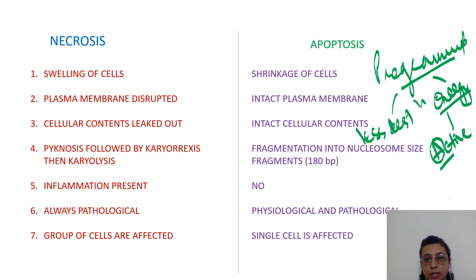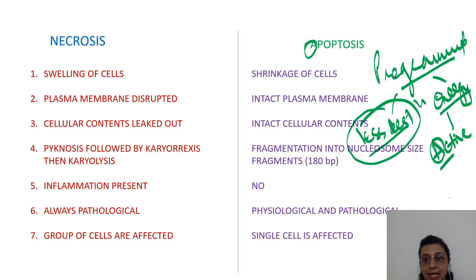Energy requirement means it is an active process. A for active, A for apoptosis — it is an active process. Lesser destruction in programmed cell death means the plasma membrane is intact and the cellular contents are also intact.